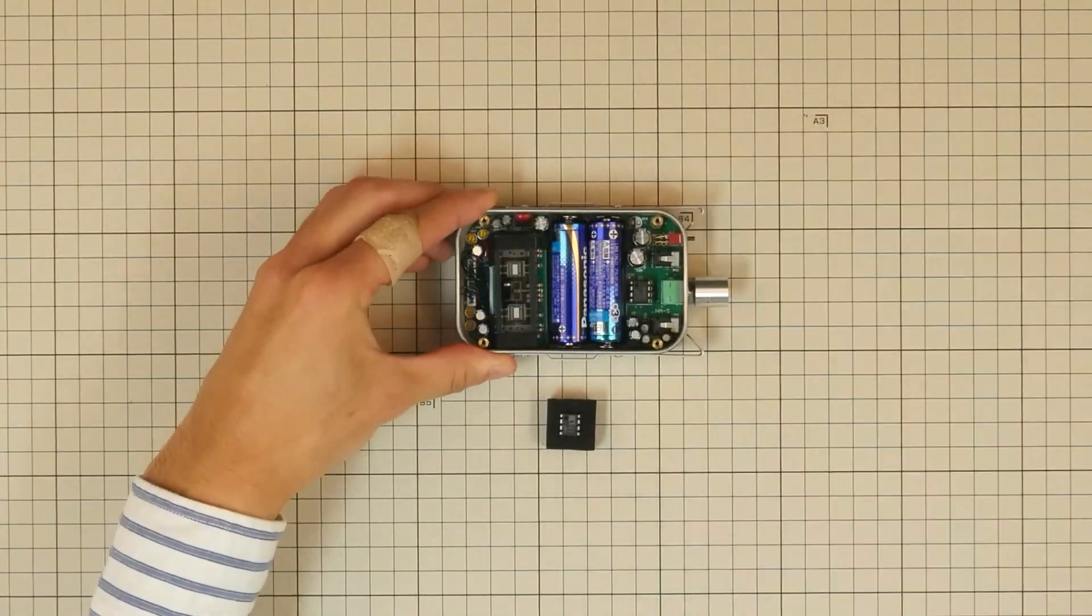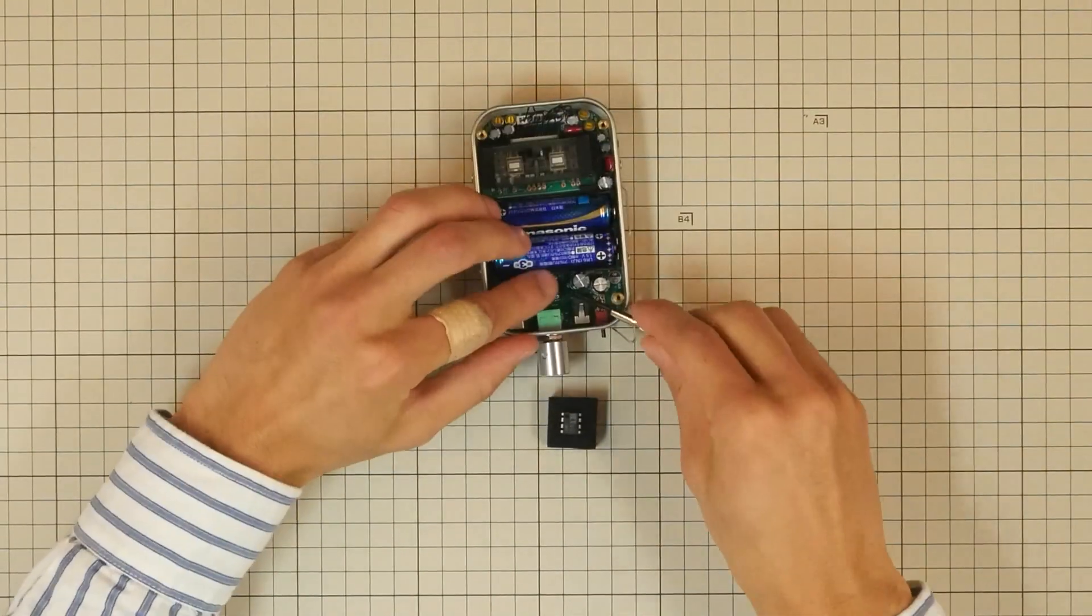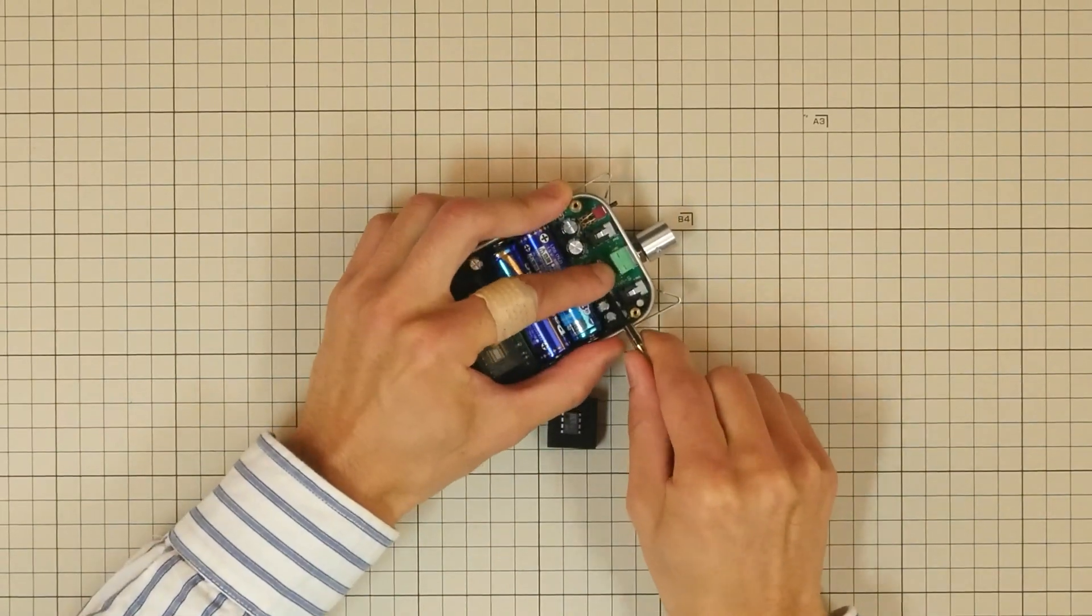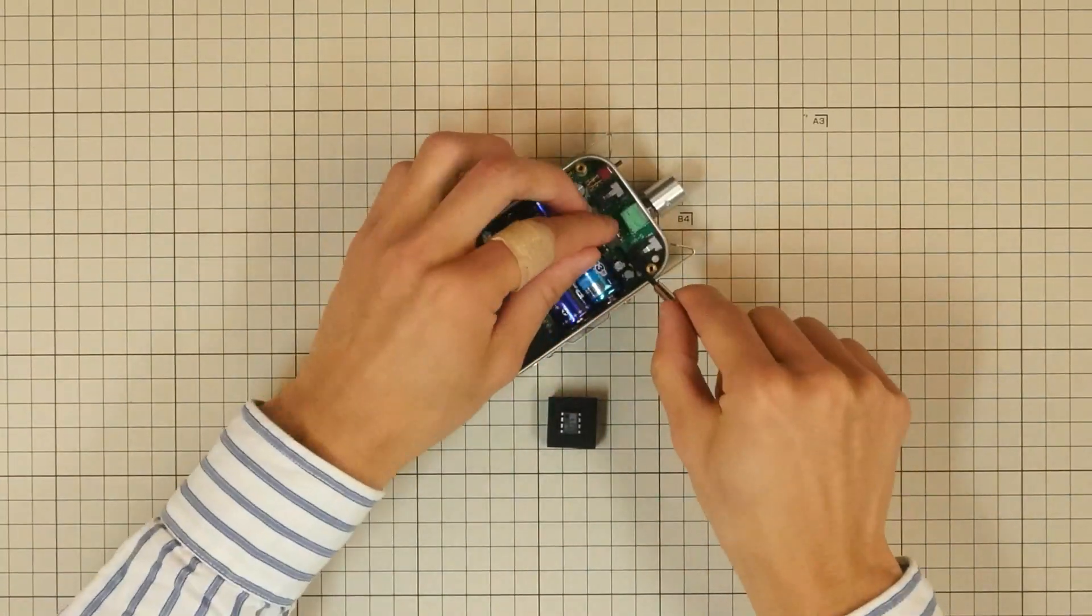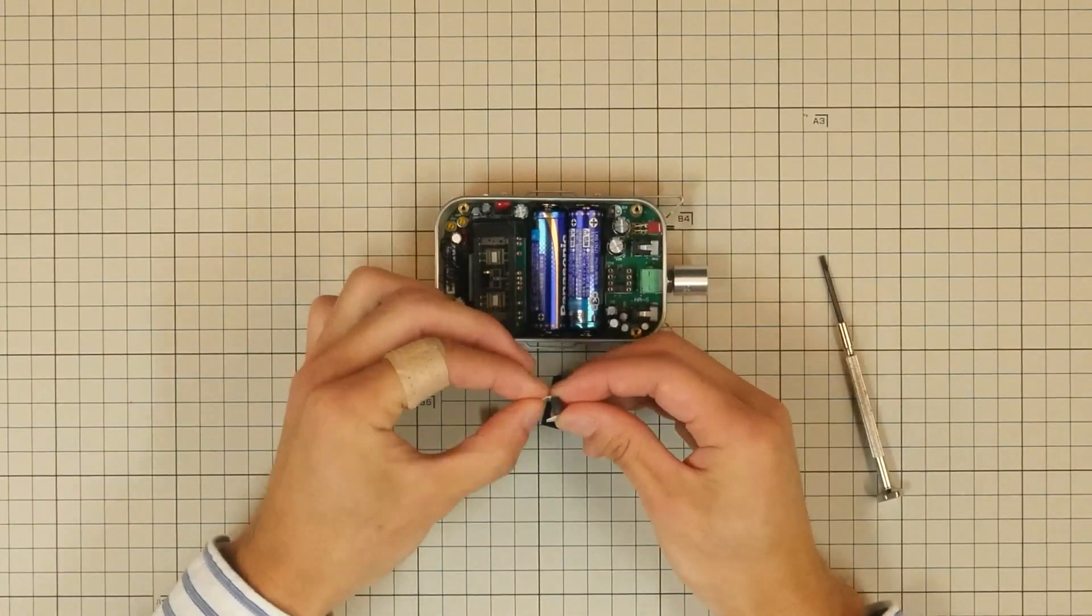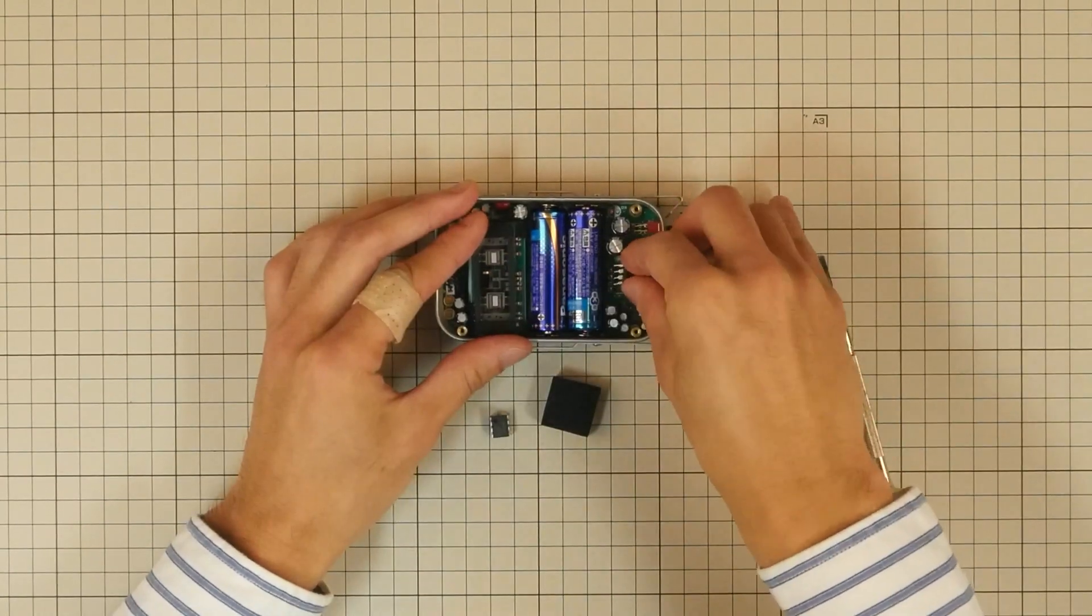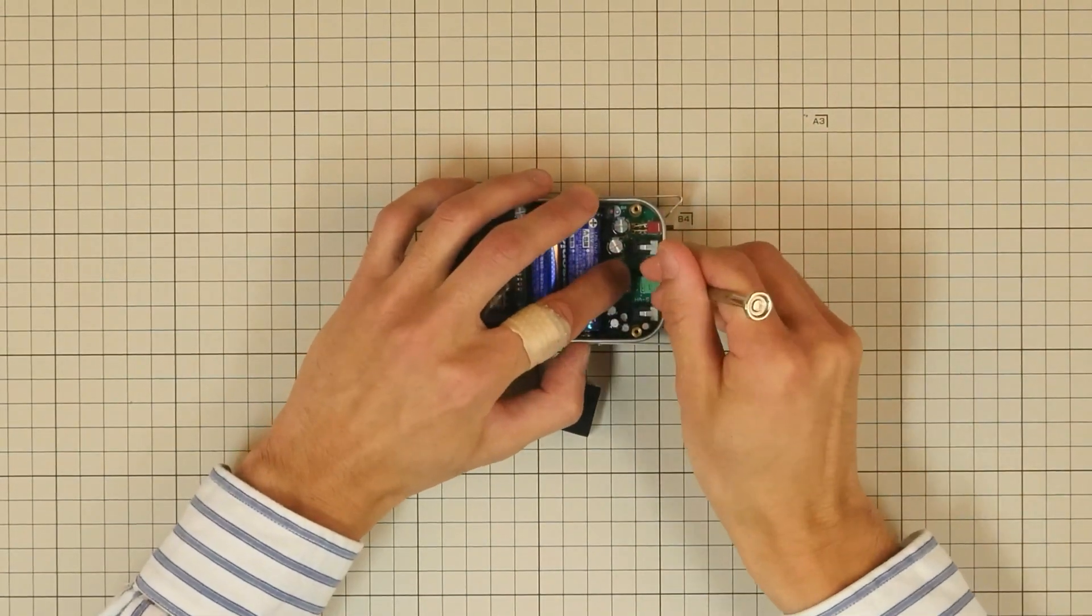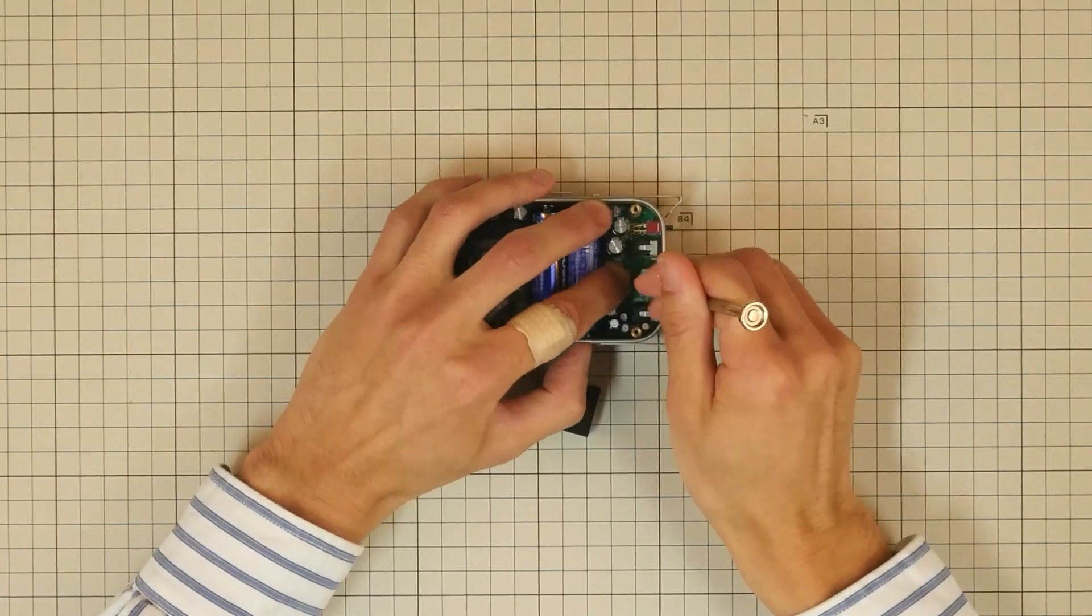The internal op amp is also user-replaceable, so if you prefer a different op amp, you can easily swap it out. Be careful to remove from the socket with a screwdriver or another tool, and swap in the one that you desire. Choose one that uses the same rated voltage.